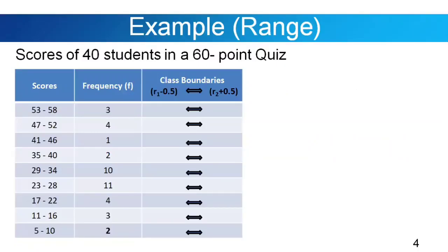So we have here our example. These are the scores of 40 students in a 60-point quiz. On the first column, we have the scores: 5-10, 11-16, 17-22, 23-28, 29-34, 35-40, 41-46, 47-52, and 53-58. On the second column, we have the frequency. For example, two students got scores from 5-10, three students got 11-16, four students got 17-22, and so on.